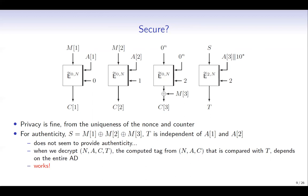However, when we decrypt N, A, C, and T, the computed tag that is compared with the received tag depends on the entire AD. For instance, when we decrypt C1 by using A1, this M1 depends on A1, and we see that the checksum also depends on A1. We can make a similar observation for other blocks, and we can in fact show that IZO-CB works and it provides authenticity.